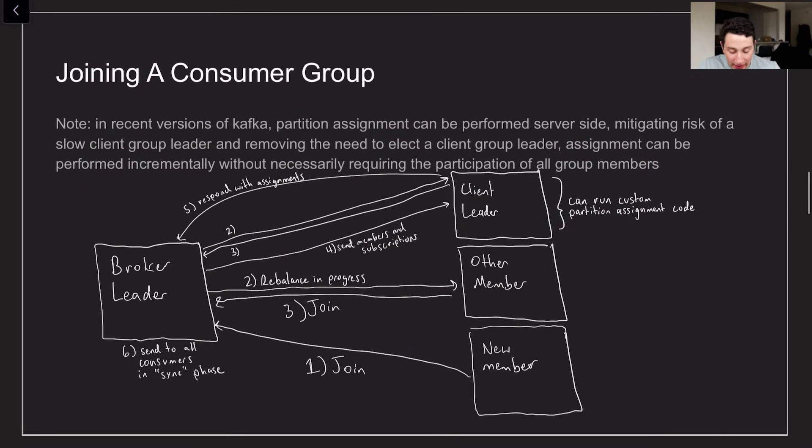So at that point when we try to join a consumer group we've got a bunch of different steps that we actually need to take. And it basically starts like this. So number one is we have that new member, we're going to resume from where we were before. It's going to join and it's going to go to that broker group leader for the particular group which again is based on the hash of the group ID.